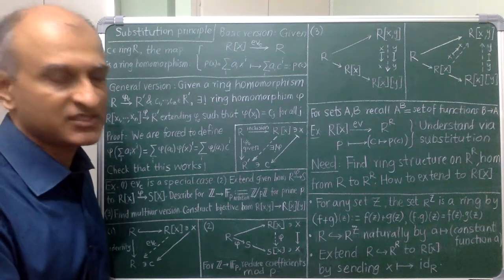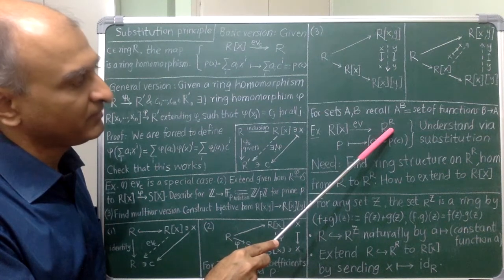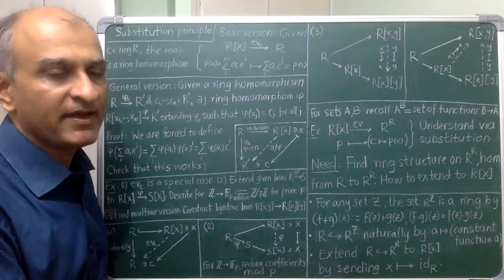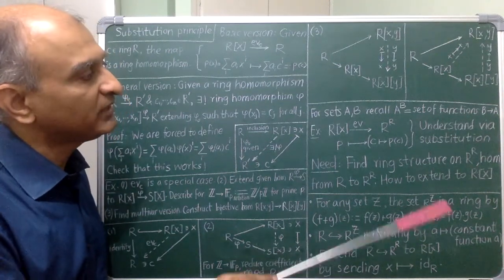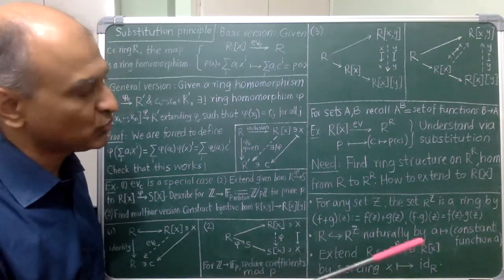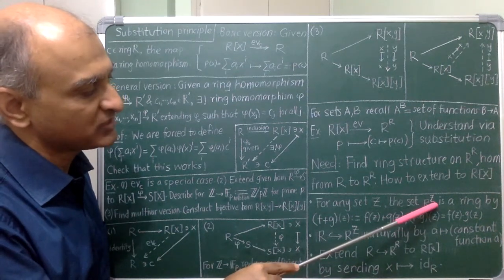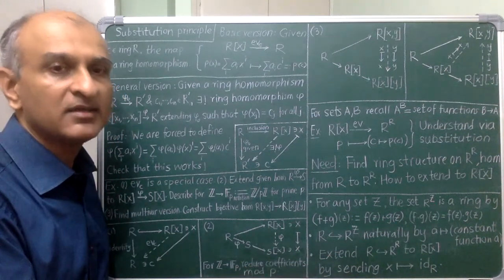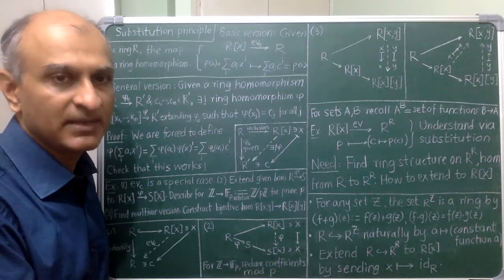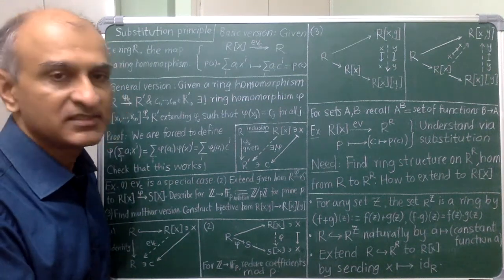Let us do this step by step. The right hand side naturally becomes a ring under pointwise addition and pointwise multiplication of functions. In fact, for this to work, we only need the target of the functions to be a ring. The source can be any set. You should check that for any set Z, the set of R valued functions on Z becomes a ring under pointwise operations. This is exactly how you added and multiplied real valued functions in school. So, this is nothing new. What is the 0 in this ring? It is the constant function 0 and similarly 1 is the constant function 1.